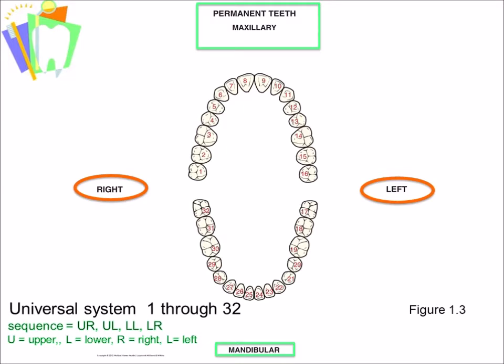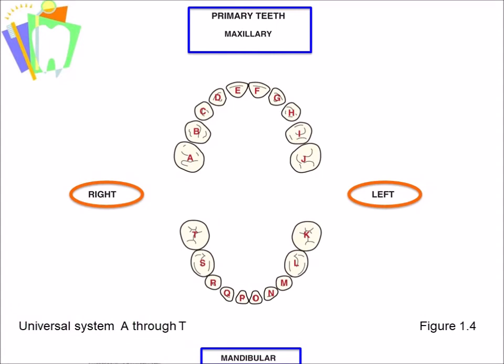We begin on the upper right. The third molar is tooth number 1, and we work our way around to the upper left third molar, then drop down to the mandibular arch and work our way back around to lower right. The sequence for the deciduous dentition is the same — beginning with capital A on the upper right, most posterior tooth, which is the deciduous second molar, working around the upper left, then dropping down to K, the lower left second deciduous molar, and working our way to lower right capital T.